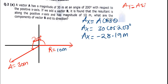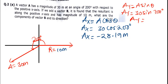Now for the y component of vector A, Ay = A sin θ. So Ay = 30 sin 200°, which gives us negative 10.26 meters.